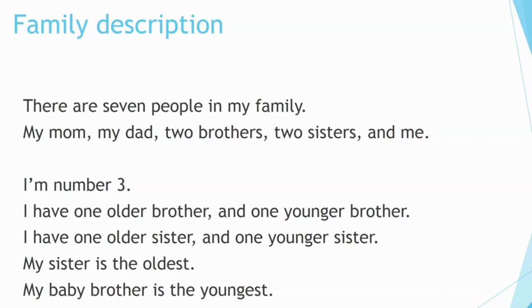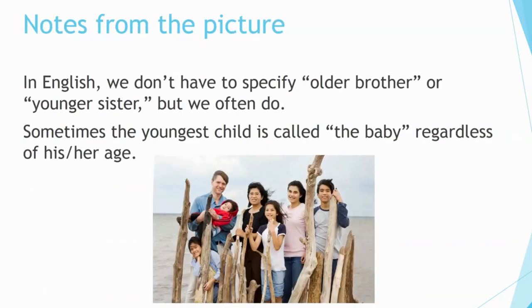I have one older brother and one younger brother. I have one older sister and one younger sister. My sister is the oldest. My baby brother is the youngest. In English, we don't have to specify 'older brother' or 'younger sister,' but we often do. Sometimes the youngest child is called 'the baby,' regardless of his or her age.